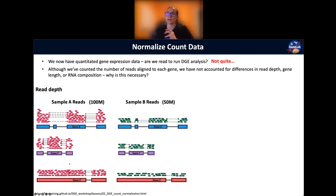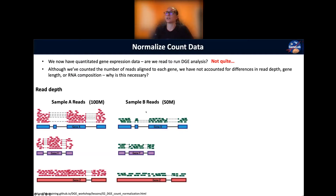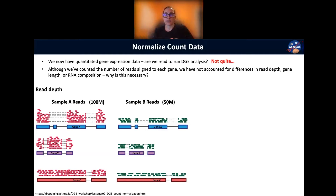In this example, each gene in sample A appears to have double the expression — double the number of reads mapping to each gene — compared with sample B. However, if we look at the read depth, sample A has 100 million reads and sample B has 50 million reads. That difference in total reads is likely accounting for the apparent doubling of expression in sample A. We also see about a 20 million read difference in our own data between the deepest and shallowest sequenced samples, so we will need to normalize for those differences.